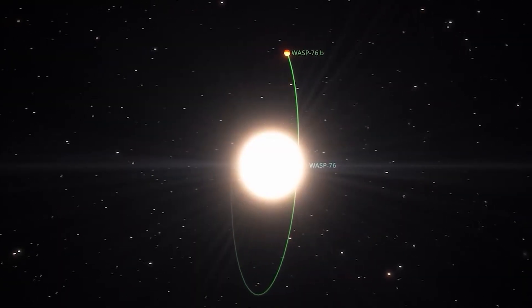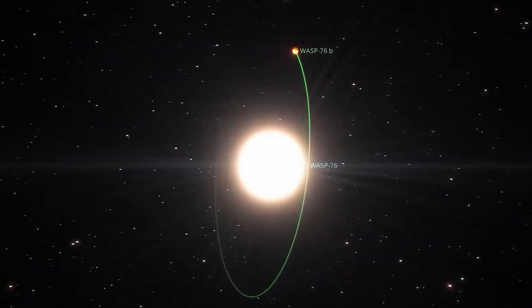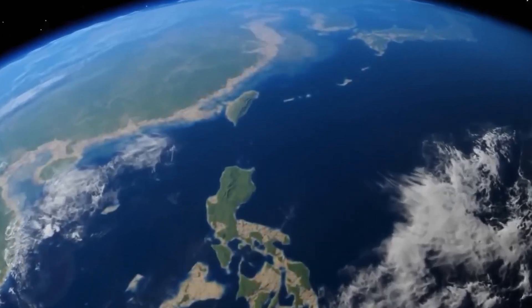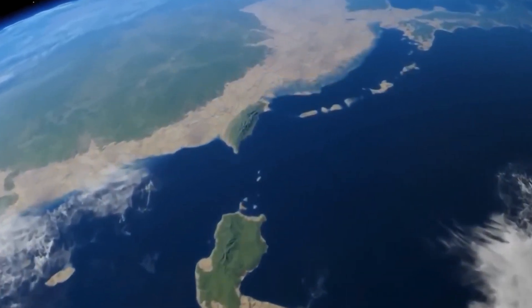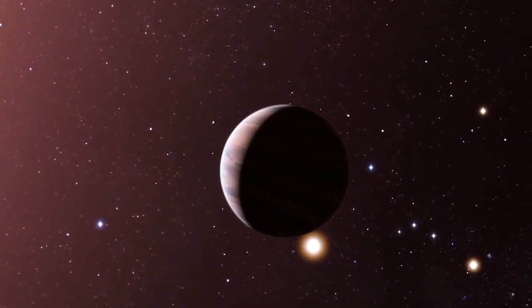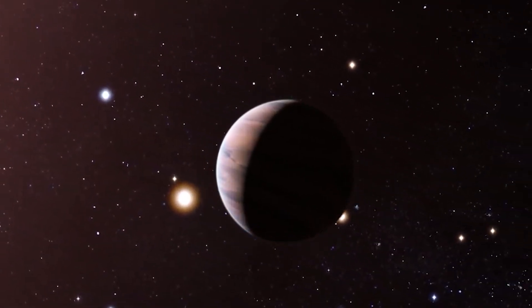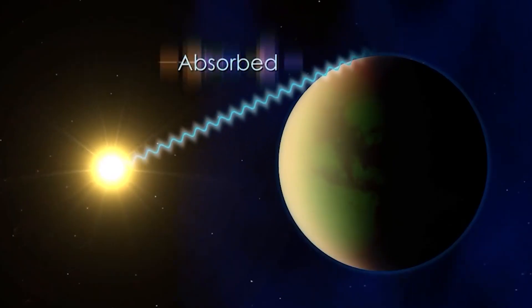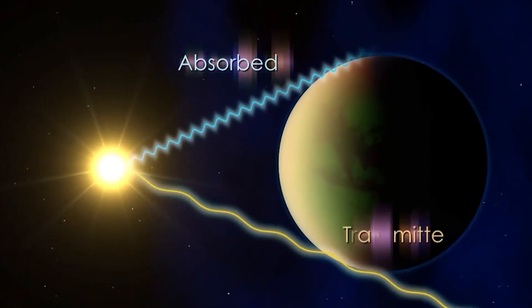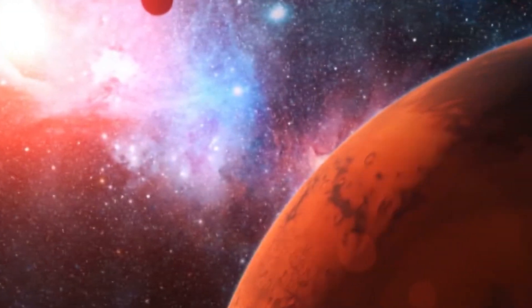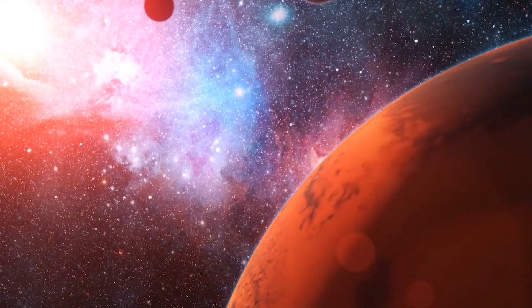However, this point cannot be readily proven because of the time it would take to observe it. But these three stars, which include Proxima Centauri, are close enough to each other for scientists to make an educated guess in this regard. Hence, the binary nature of the Alpha Centauri system of which Proxima Centauri is a part.